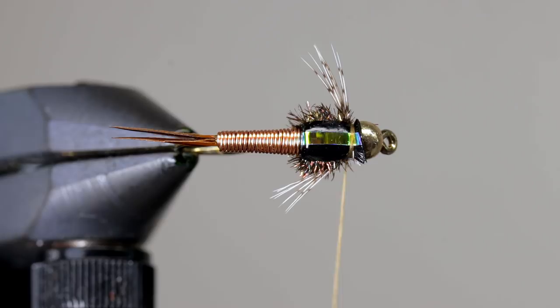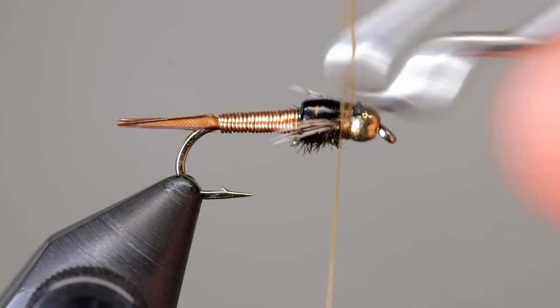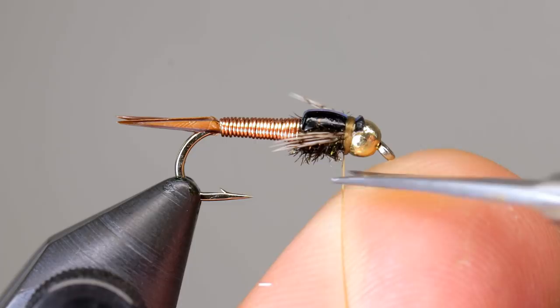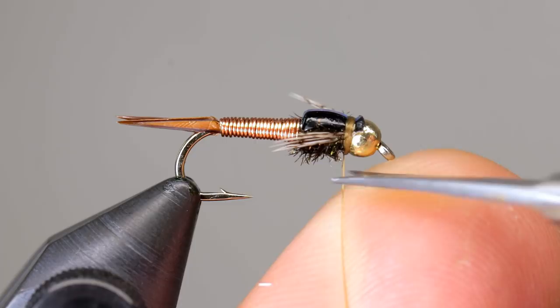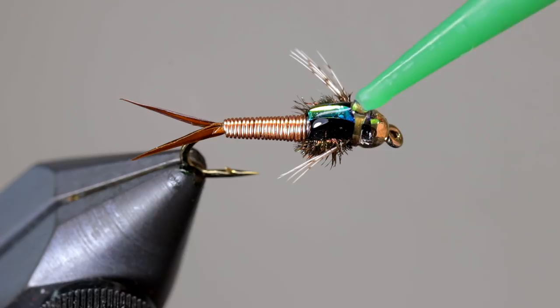Whip finish in the same spot and cut your thread free. Usually an epoxy is used to cover the wing case, but sometimes I only need to tie a couple at a time. So instead of mixing epoxy, I prefer to just use UV resin. Cover the wing case with a thick resin. Do your best to get it to go over all of the scudback. Since scudback doesn't take resin as well as other materials, make sure you get resin onto the bead, covering the butts of the scudback and the mylar. This will act as an anchor and help the resin to stay attached. Also be sure to get some of the resin onto the copper wire. Again, this will help the resin to stay attached to the fly and will also create a smoother looking taper between the abdomen and the thorax.